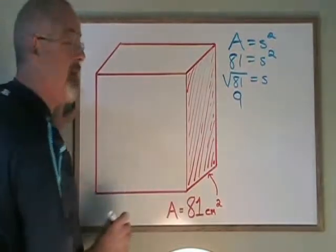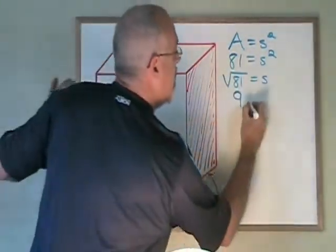Since the area was given as centimeter squared, our side length will be 9 centimeters.